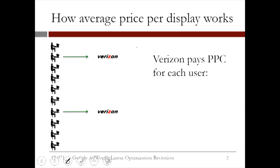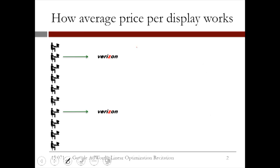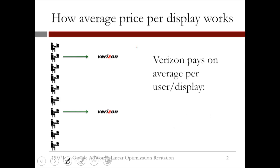Verizon must now pay the price per click for each of these users. Since there were two clicks and each click cost $25, Verizon must pay a total of $50 to Google. If we consider how much Verizon paid to Google on average per user — or equivalently, how much Verizon paid per display of the ad — we just divide the total amount of $50 by the 10 users who saw the ad. Doing this, we see that the average price per display was $5.